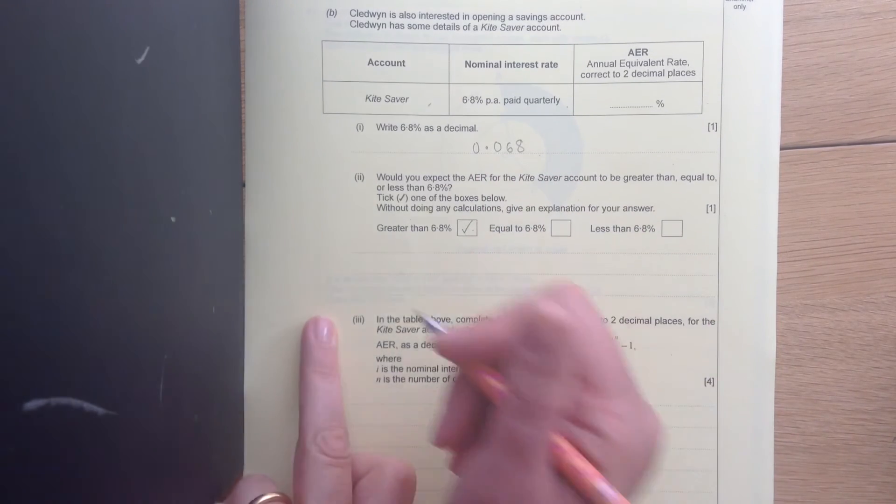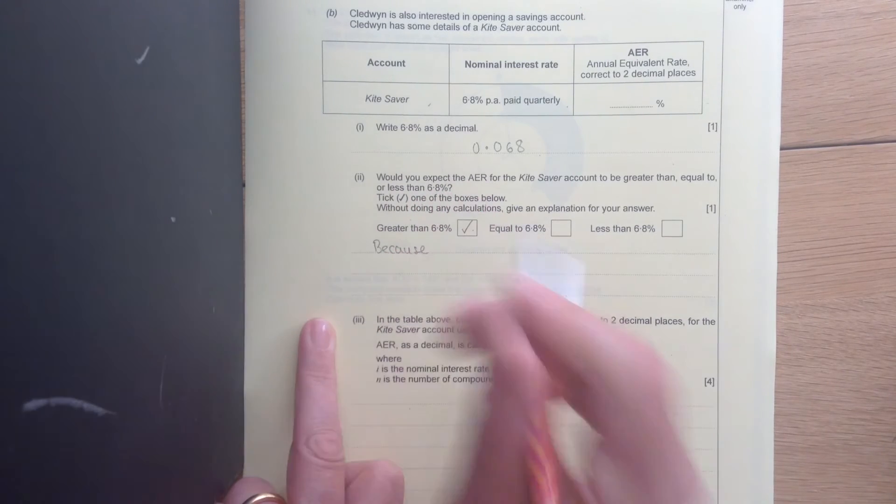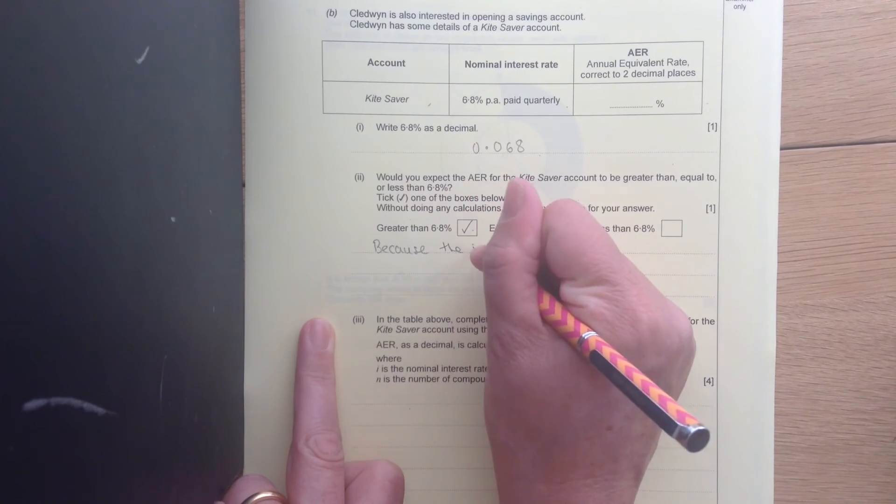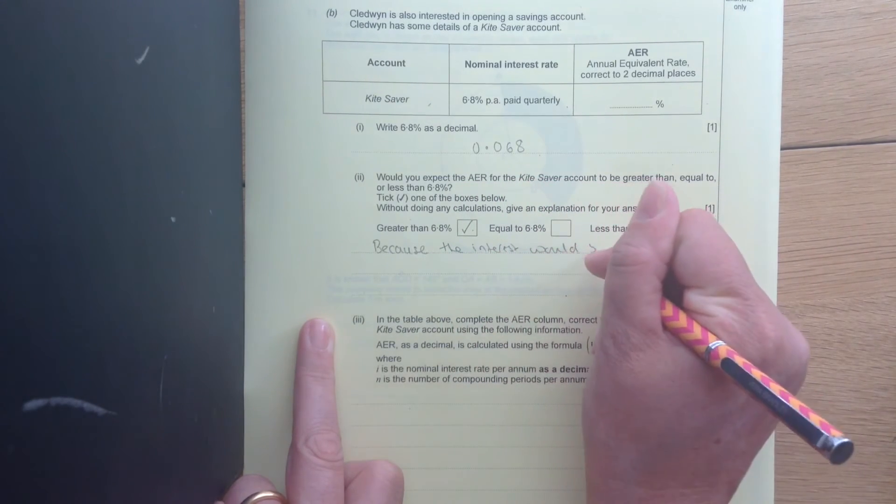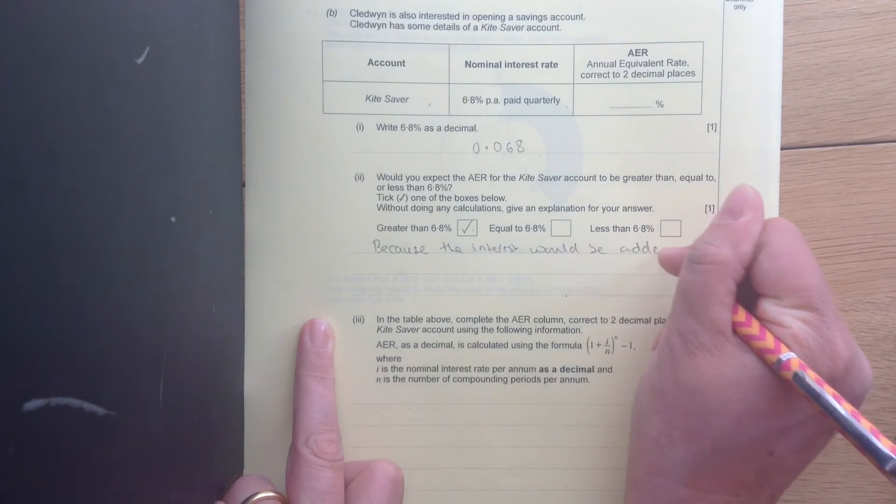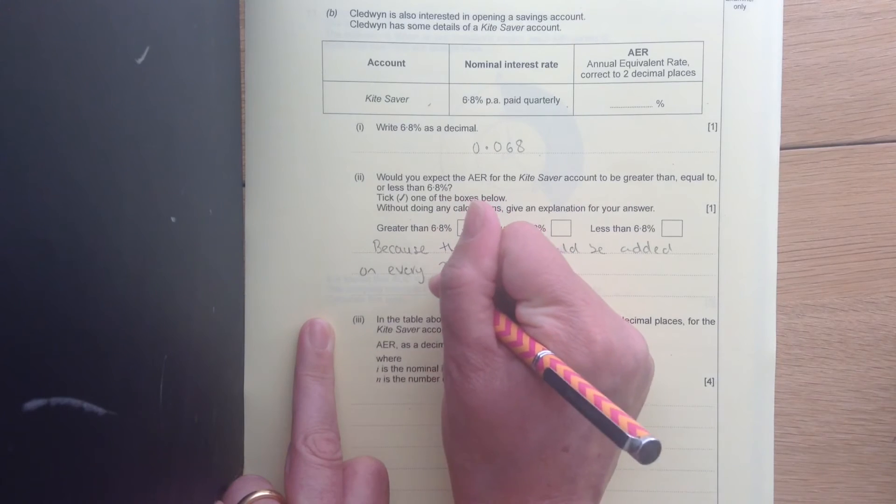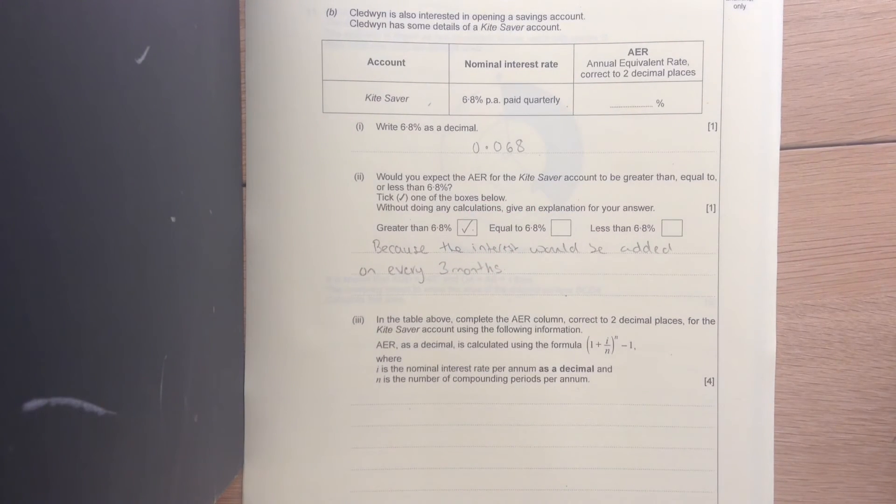And because the interest would be added on every three months, it means after three months, that interest then earns interest. And after six months, you get another lot of interest, which then earns interest as well. So it will end up being more than 6.8.